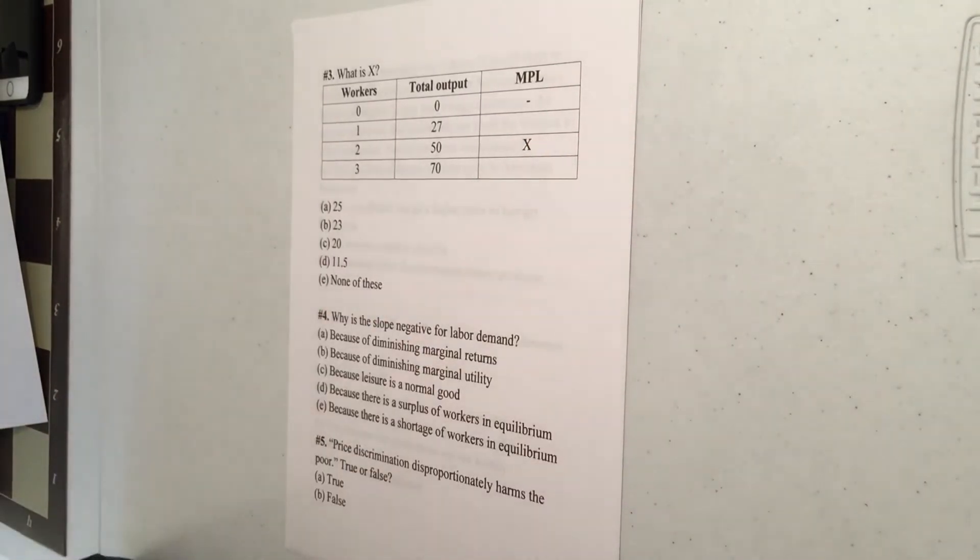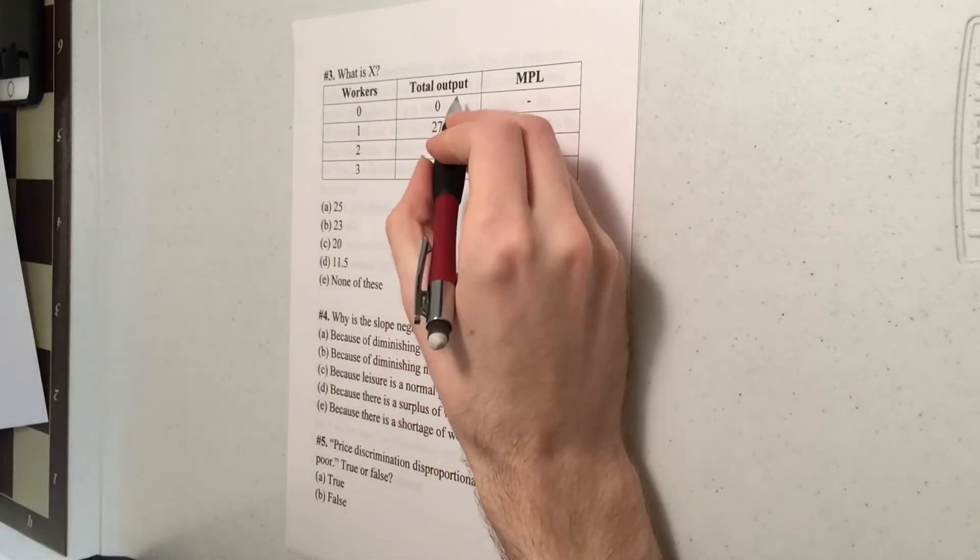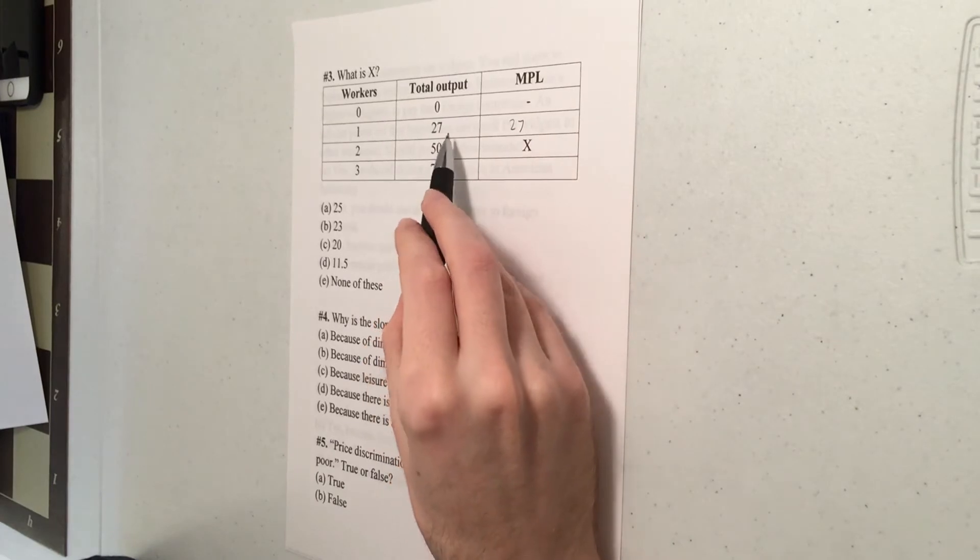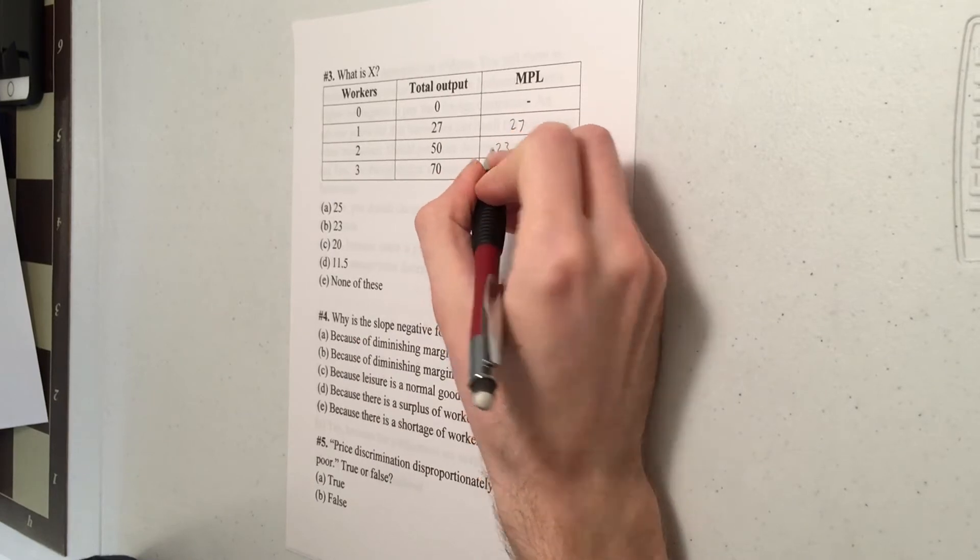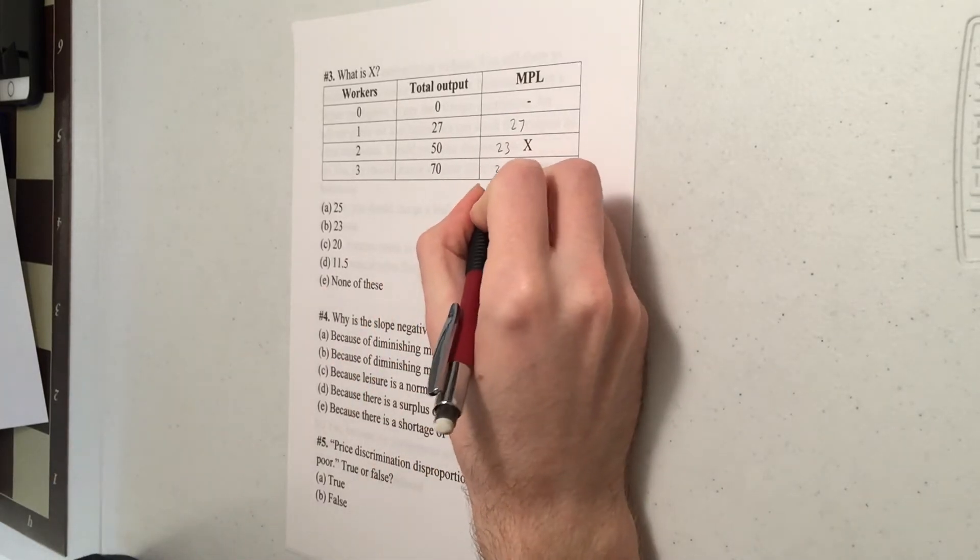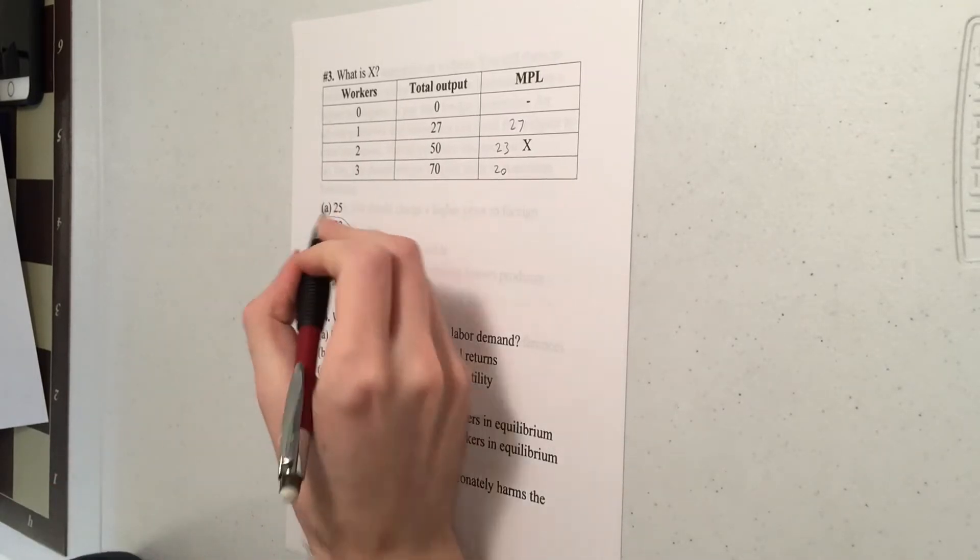Moving on. Number three, we're trying to calculate the MPL. So we know the MPL is the change in total output. So output rises by 27 here, so it's going to be 27. Here total output goes from 27 to 50. That's an increase of 23, because 27 plus 23 is 50. This last one being 20 because going from 50 to 70 is an increase of 20. So X is 23. That's choice B over here.